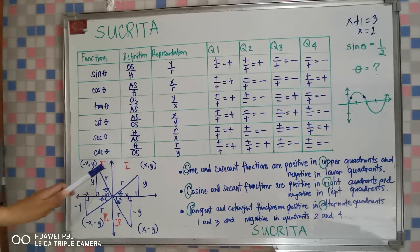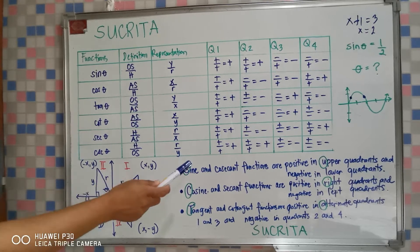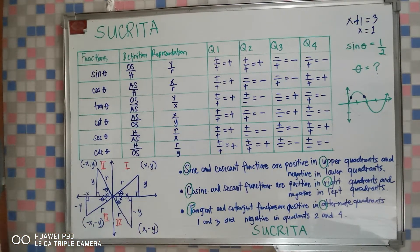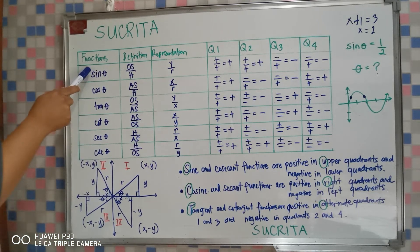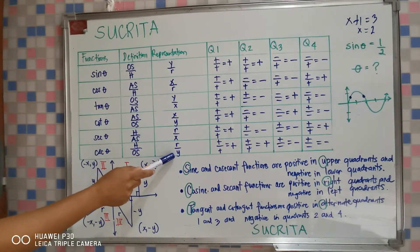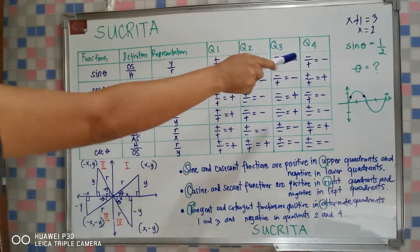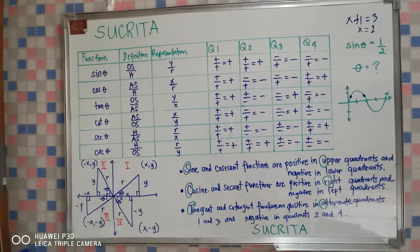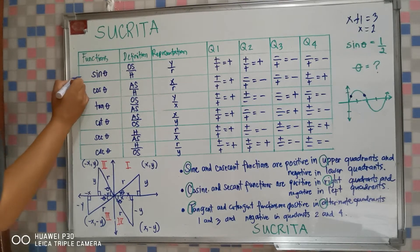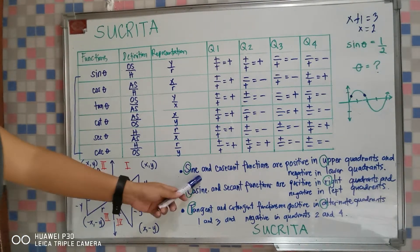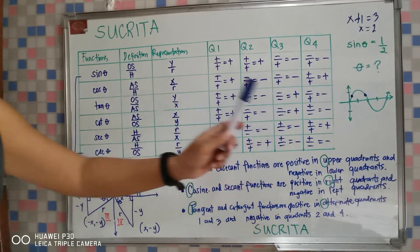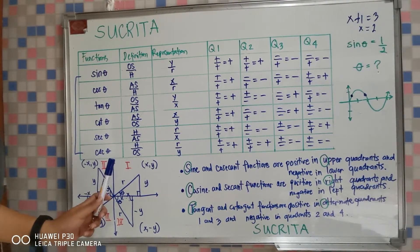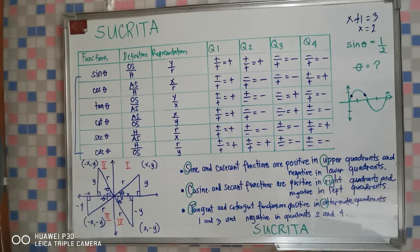So the sine function is positive in quadrants 1 and 2, and negative in quadrants 3 and 4 — meaning sine is positive in the upper quadrants but negative in the lower quadrants. Sine and cosecant share this property because cosecant is the reciprocal of sine: if sine is y over r, cosecant is r over y. Therefore, the sine and cosecant functions are both positive in upper quadrants 1 and 2, and negative in lower quadrants 3 and 4.